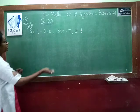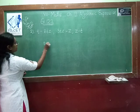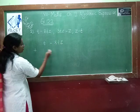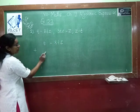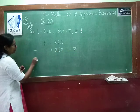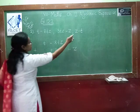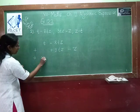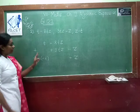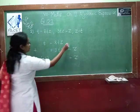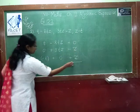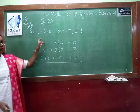We arrange the terms column-wise. t minus 8tz — then for the next row, the t term is not given so we leave a blank space and write plus 3tz minus z. Then for z minus t, we write minus t and plus z. Wherever you have a blank space, write 0 so that you will not make any mistakes.